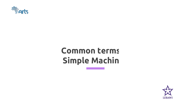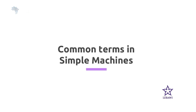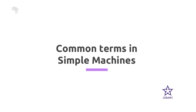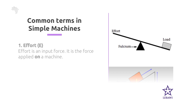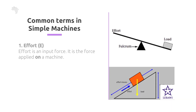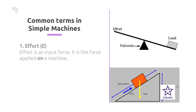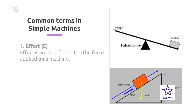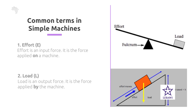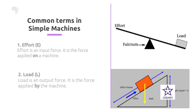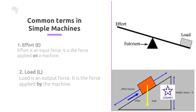Now let's look at common terms used in all these simple machines. The first one is effort, which is defined as the input force — the force applied on a machine. Its unit is Newton. The second term is load, which is the output force — the force applied by the machine. Its unit is also Newton.